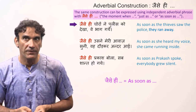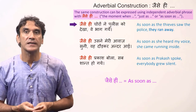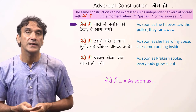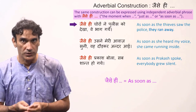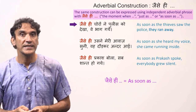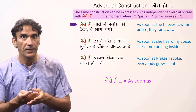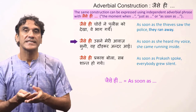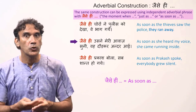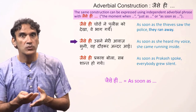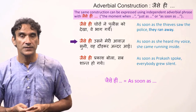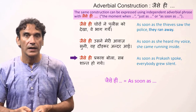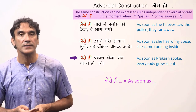'Jaise hi choro ne police ko dekha, ve bhaag gaye' — as soon as the thieves saw the police, they ran away. Keep in mind that when you use the phrase 'jaise hi', the construction will have two clauses, two sentences. 'Jaise hi usne meri awaaz suni, wo dhaur kar andar aai' — as soon as she heard my voice, she came running inside. 'Jaise hi Prakash bola, sab shant ho gaye' — as soon as Prakash spoke, everybody grew silent.